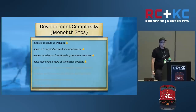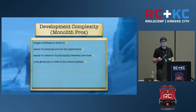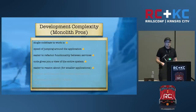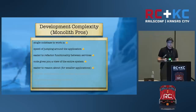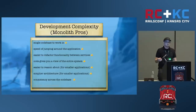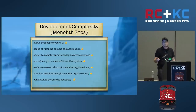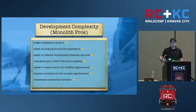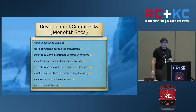In the monolith, the code gives you a view of the entire system, which makes things easier to reason about for smaller applications, implying a simpler architecture. Additionally, you get consistency across the code base. For example, it becomes easier to enforce coding standards, linting, code complexity analysis, like if you use Cane or something like that. And again, all great for small teams.